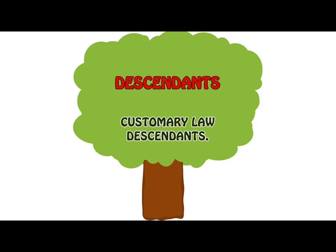In customary law, descendants generally include a wider circle of descendants. In terms of section 1 of the Reform of Customary Law of Succession Act, descendants would include a person who is a descendant in terms of the Intestate Succession Act, as well as a person who, during the lifetime of the deceased person, was accepted by that deceased person in accordance with customary law as his or her own child. For example, any child born of a wife during a marriage are considered children of that husband, regardless of whether they are children born out of wedlock.